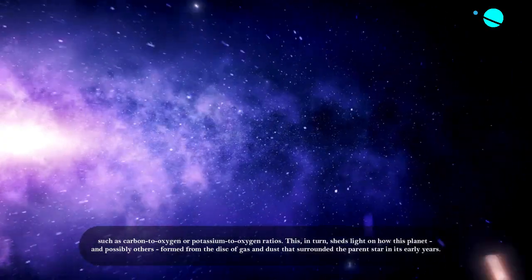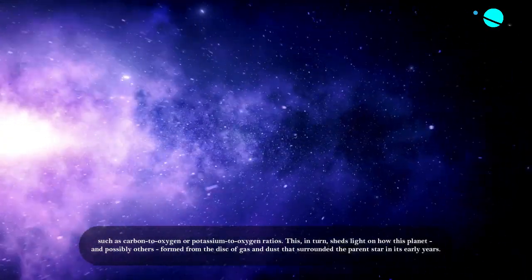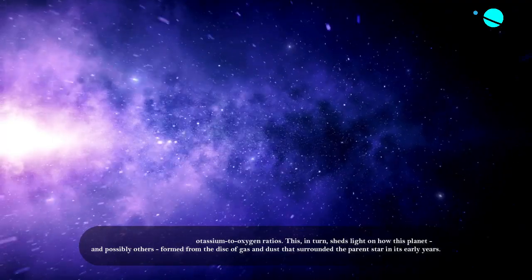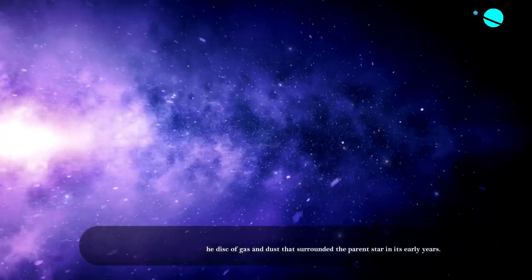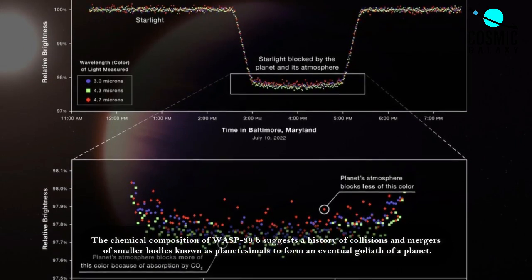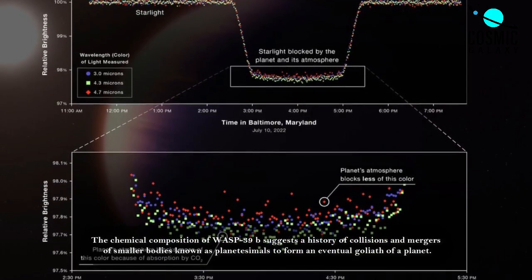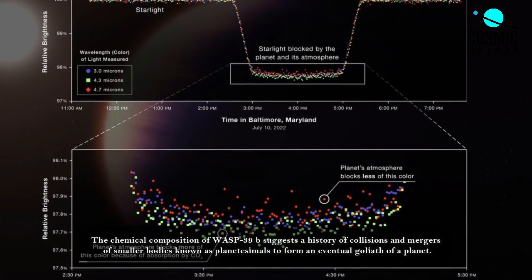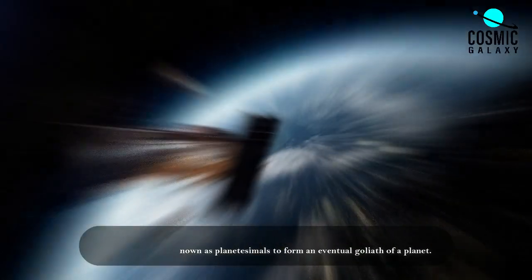This, in turn, sheds light on how this planet, and possibly others, formed from the disk of gas and dust that surrounded the parent star in its early years. The chemical composition of WASP-39b suggests a history of collisions and mergers of smaller bodies known as planetesimals to form an eventual goliath of a planet.